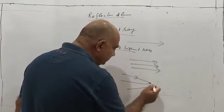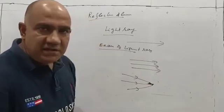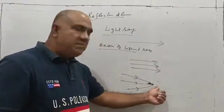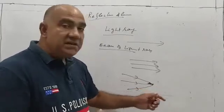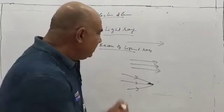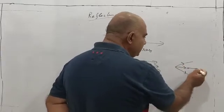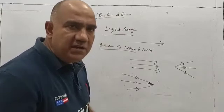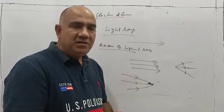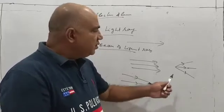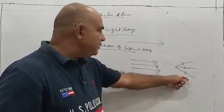A parallel beam of light is one where the rays originating from the source and moving in a definite direction are parallel to each other. A convergent beam of light is one where the light rays actually meet or appear to meet at a point. A divergent beam of light is one in which the light rays spread away from each other, or appear to spread — either they spread or they appear to spread.